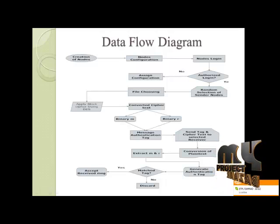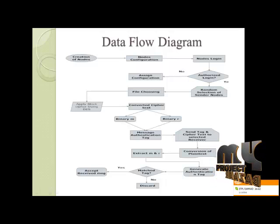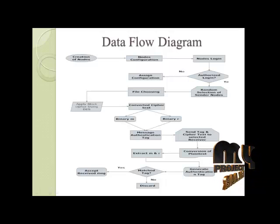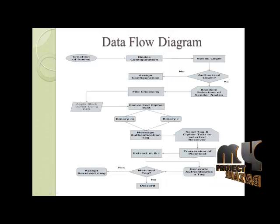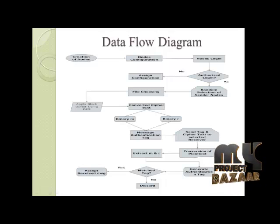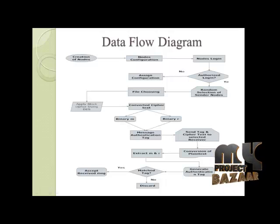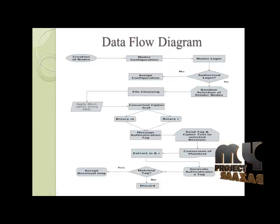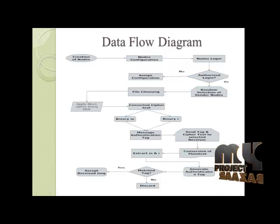We then generate a binary value R, which is a random nonce used alongside the ciphertext. With both binary values M and R, we generate the message authentication tag, which is sent to the receiver by appending both the authentication tag and the ciphertext together.